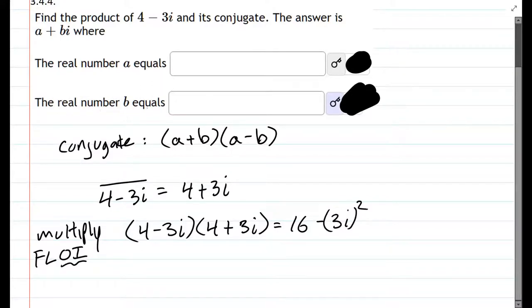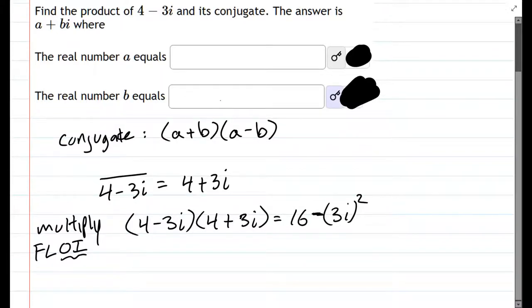Remember, one of them is negative, the other one's positive, so that's why the negative is outside the square. The outside term is 4 times 3i, which is 12i. The inside term, negative 3i times 4, is negative 12i. So we have 3i squared. So it's 3 squared i squared plus 12i minus 12i, which cancels out.